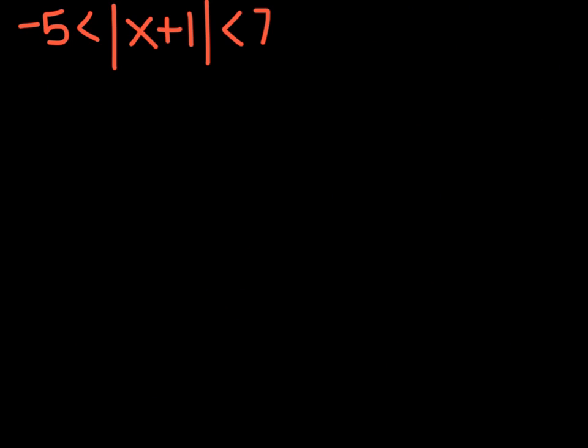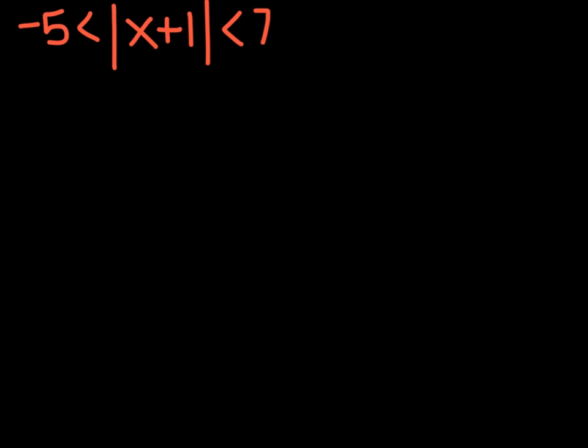Here's another one. It doesn't say for anything specific, so we'll just go with all reals. We need to turn this into two different inequalities. So we will write negative 5 is less than x plus 1 is less than 7, and negative 5 is less than the negative of (x plus 1) is less than 7. Don't forget those parentheses.